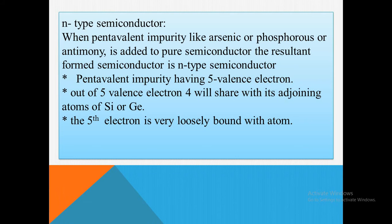Look at the first — N-type semiconductor. When a pentavalent impurity like arsenic, phosphorus, or antimony is added to a pure semiconductor, the resultant formed semiconductor is N-type. Pentavalent impurity means the impurity atoms have five valence electrons. Out of five valence electrons, four share with adjacent atoms of silicon or germanium forming a covalent bond, and the fifth electron is loosely bound with the atom with an energy of 0.01 electron volt. Since a free electron is obtained which acts as a charge carrier, the crystal is called N-type because the conductivity increases due to the negative charge.